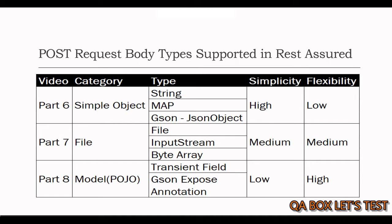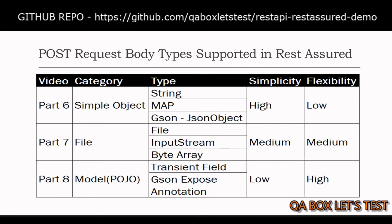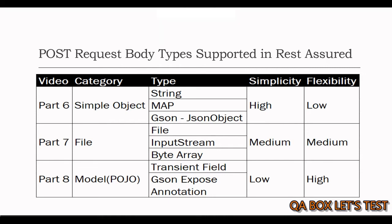Any data structure used to construct the request payload has to be serialized to JSON before sending it to the server. The advantage of using POJO classes is that we can use them in both request and response body. While sending the request, we serialize the POJO instance into JSON using the Google JSON library added in part six. On receiving the response, we can deserialize the response body back into the same POJO instance.